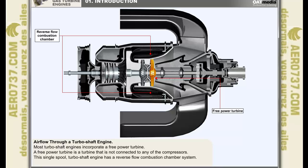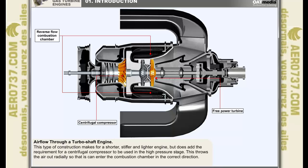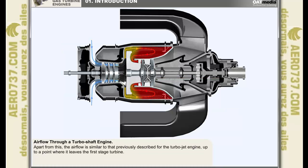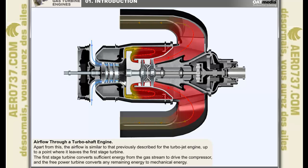The single spool turboshaft engine illustrated here has a reverse flow combustion chamber system. This allows the engine to be much shorter, stiffer and lighter than it otherwise would be, but does add the requirement for a centrifugal compressor to be used in the high pressure stage. This allows for the air to be thrown out radially in order that it can enter the combustion chamber in the correct direction. Other than this deviation, the airflow is similar to that previously described for the turbojet engine, up to the point where it leaves the first stage turbine. The first stage turbine having converted sufficient energy from the gas stream to drive the compressor, the free power turbine converts any remaining energy to mechanical energy, which is utilized to drive whatever is attached to its shaft.